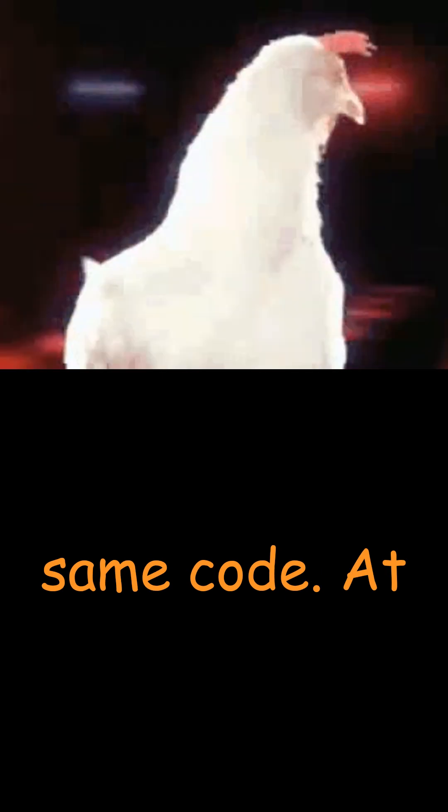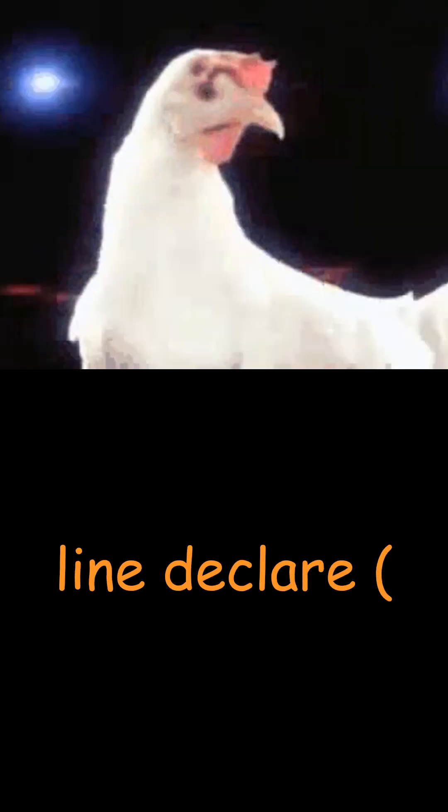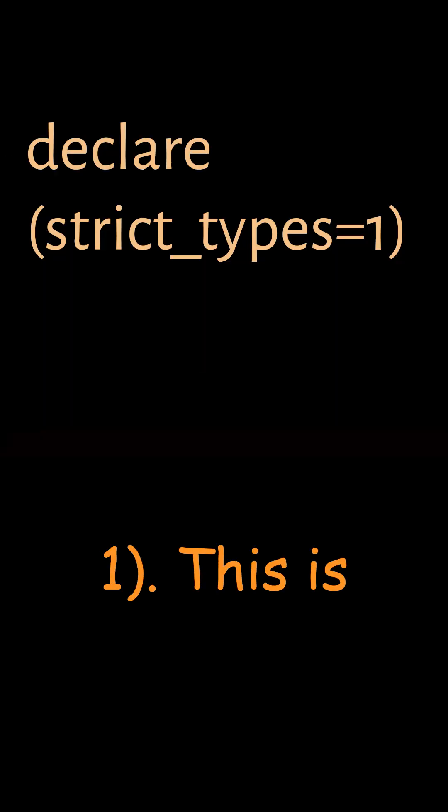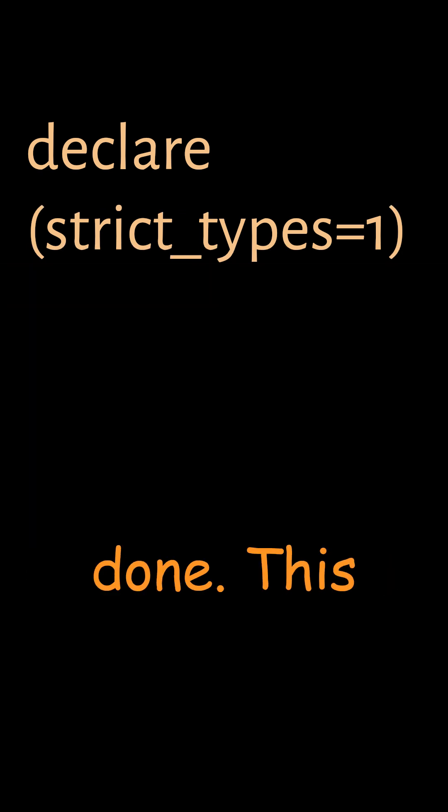Now, here is the second version of the same code. At the top we have added a line declare strict_types equals 1. This is the only update we have done.